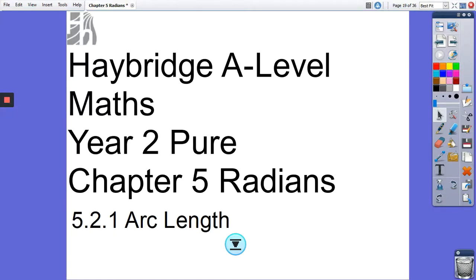Hello and welcome to Haybridge Math Department, Year 2 Pure. We're looking at Chapter 5 Radians, and we're looking at arc length to start off with today. Now this is an application of radians, it's a topic that you would have covered at GCSE, but you'll see that when we measure our angles in radians, as we have been doing, the formula for arc length is actually easier. So this is one of the rare occasions when at A-level the question or the topic is easier than at GCSE.